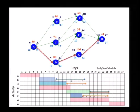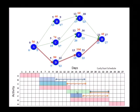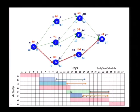Beyond a certain point, because B is connected to E, after B goes beyond 12, it starts affecting E. So one way, before it affects E — what is the float of B called? Free float. B has three days of free float, so it can move 1, 2, 3. If it moves the fourth day, then the early start of E starts getting affected. So B has eight days of total float and three days of free float.